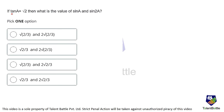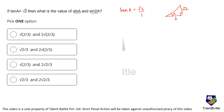The first problem: if tan a equals root 2, find the value of sin a and sin 2a. What is given is tan a equals root 2, which can be written as root 2 upon 1. If we take this as a right angle triangle with angle a, then tan a equals opposite upon adjacent, which is root 2 upon 1.